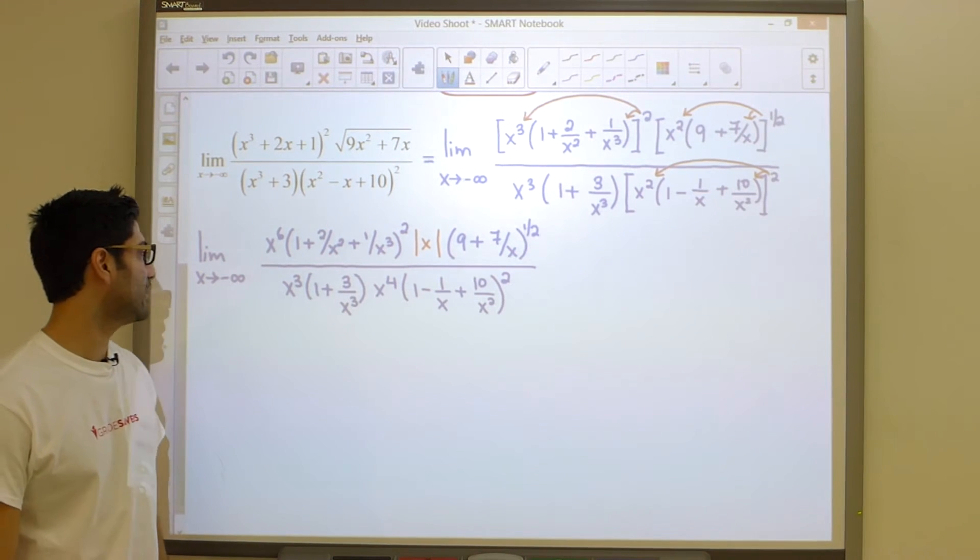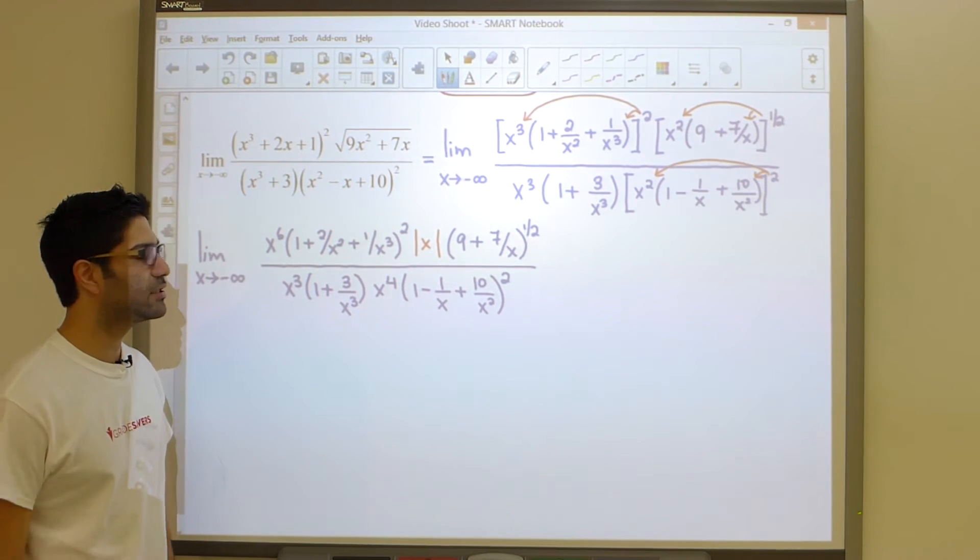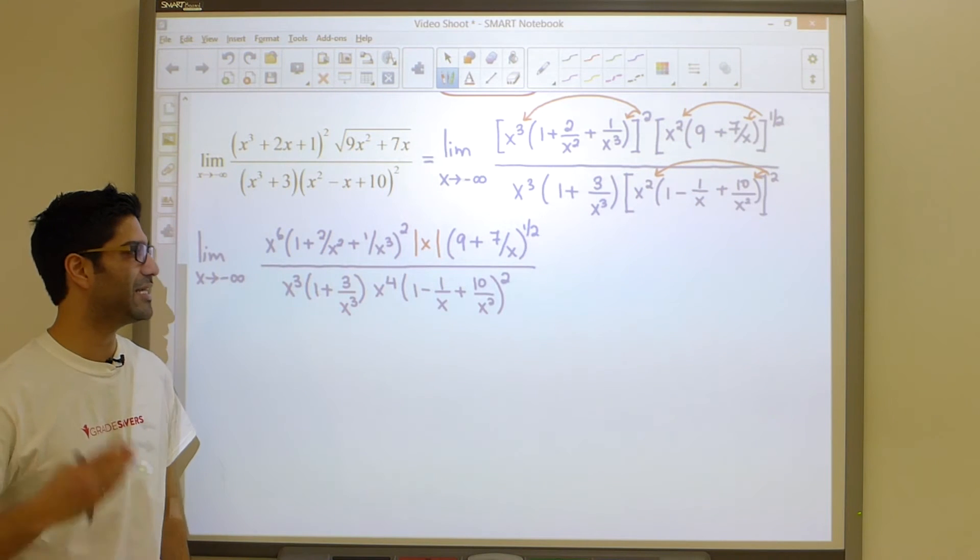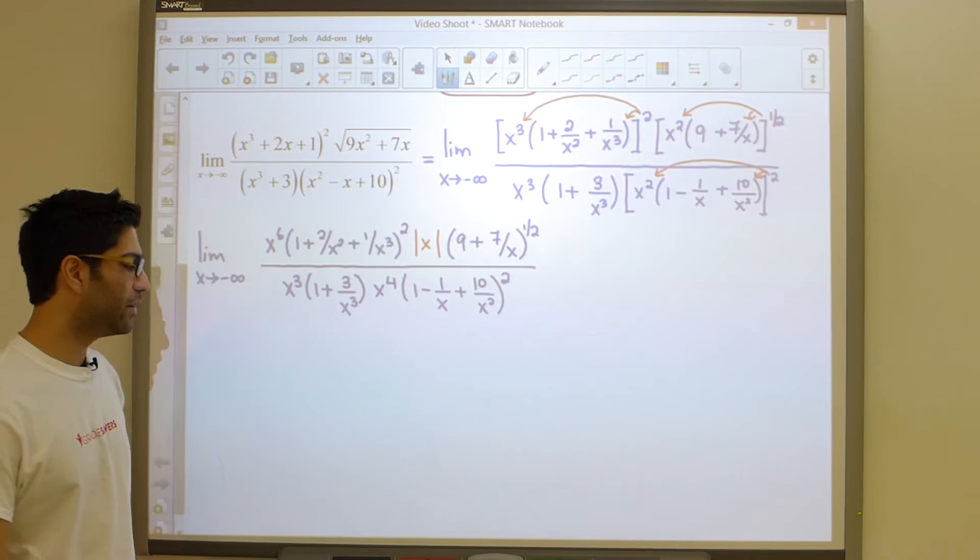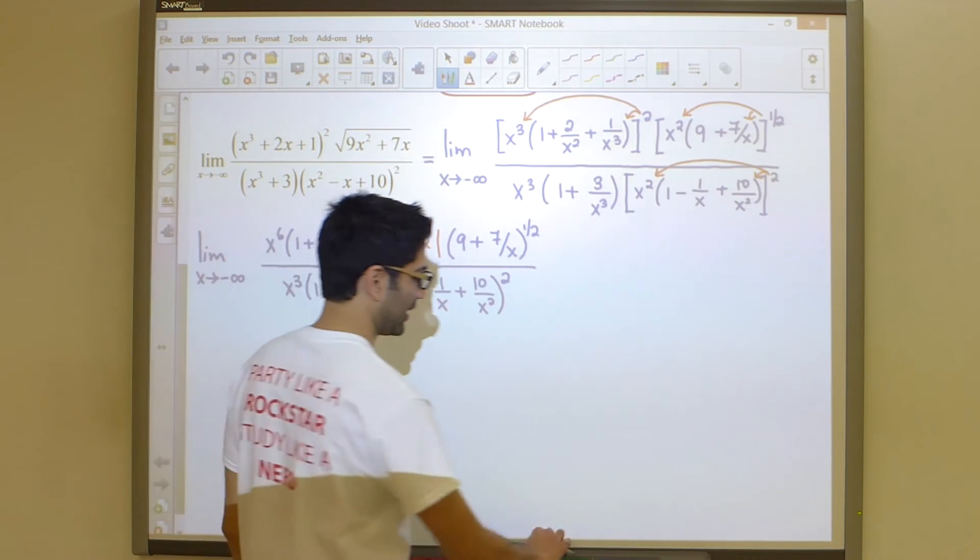So there we have our second step completed. However, we have a new problem. We recognize that there is an absolute value present in our limit. If we ever see this, we should know that our immediate next step needs to be to get rid of this absolute value. Let's have a very quick chat about how to get that done.